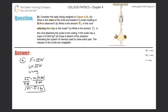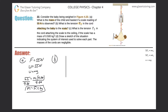Now letter b: What is the tension T1 in the cord attaching the baby to the scale? In the picture, here's the scale and here's the baby — we're looking for the tension in the middle. The system is the baby and basket. Drawing a free body diagram: the baby's weight points straight down, equal to mg, which is 55 newtons, and the tension points straight up.